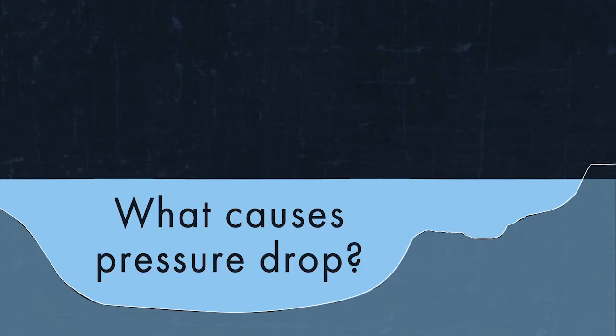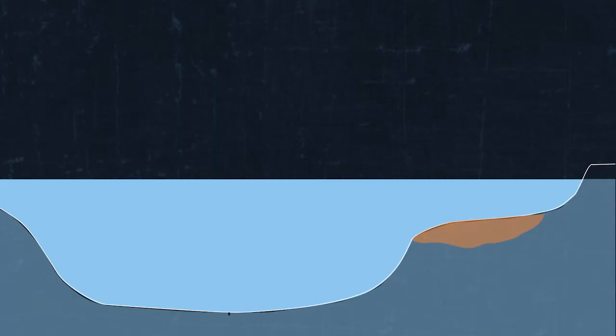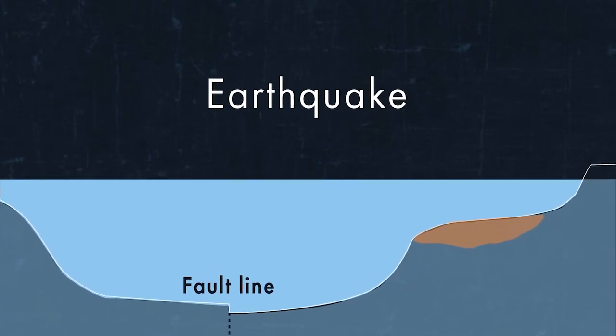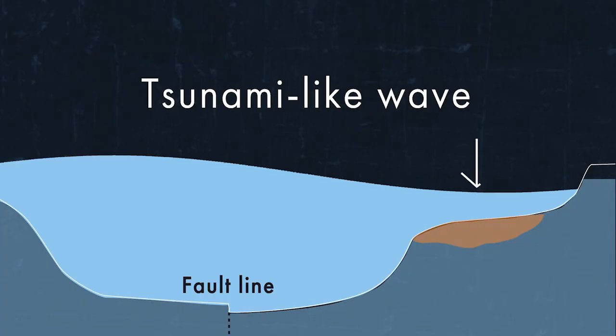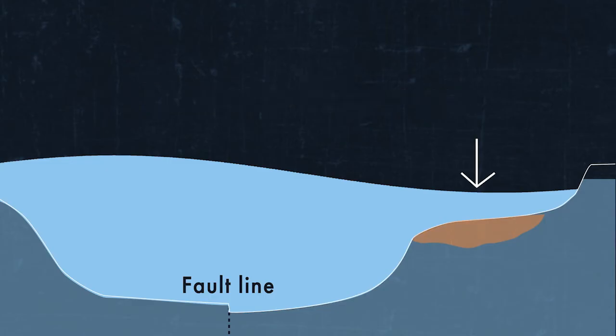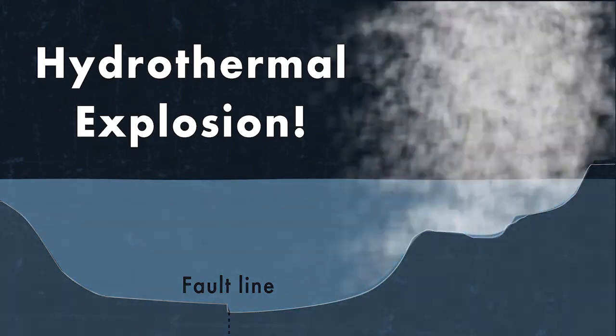Scientists have proposed a number of different triggering mechanisms. One of the strongest hypotheses involves the caldera boundary fault that runs directly beneath the lake. If this fault were to experience a major earthquake, it could cause a tsunami-type wave that rapidly pulled water off of a lake floor hot spring, depressurizing the hot water and causing a hydrothermal explosion.